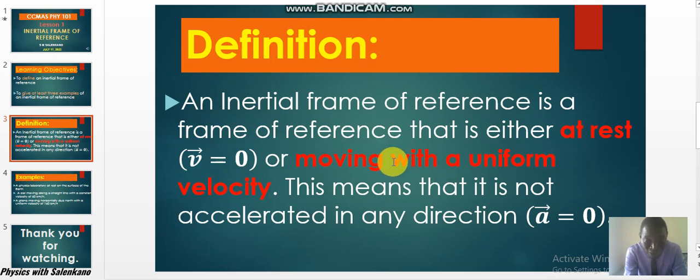Not just any velocity, but uniform. It has to be constant, not changing. And if it is at rest or it is moving with uniform velocity, we know the acceleration has to be zero. This means that it is not accelerated in any direction.